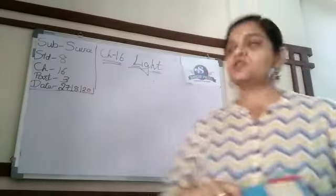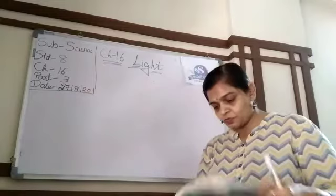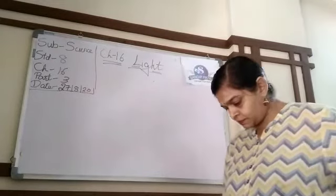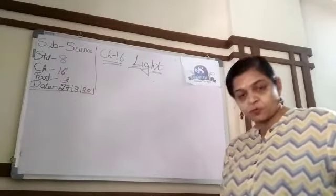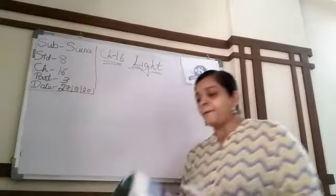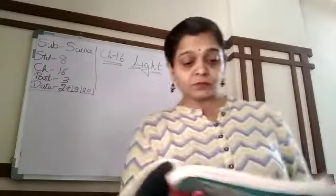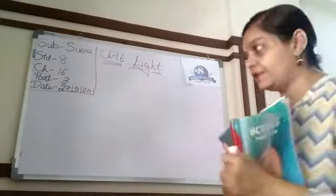Welcome children to the third part of chapter 16. I will continue from page number 204 from kaleidoscope. What is a kaleidoscope? It is a device which is used to make patterns.